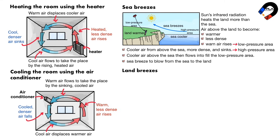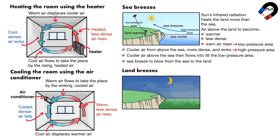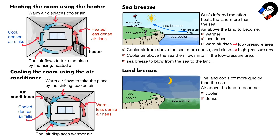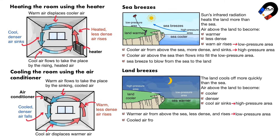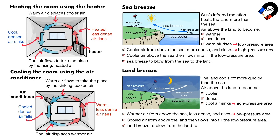Land breezes are the reverse process of sea breezes and occur during the night. The land cools off more quickly than the sea, causing the air above the land to become cooler and denser than the air above the sea. The cooler air above the land sinks, creating a high pressure area. Warmer, less dense air from above the sea rises, creating a low pressure area. The cooler air from above the land then flows in to fill the low pressure area, causing a land breeze to blow from the land to the sea.